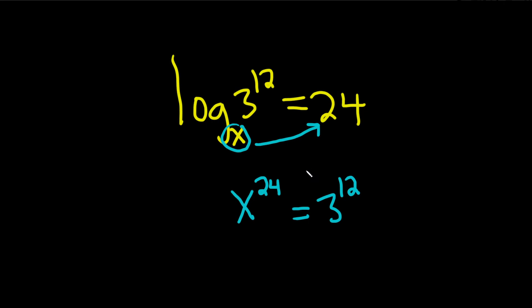Then we have to solve this equation for x. So one idea maybe is to raise both sides to the 1 over 24 like this. Okay, just like this.